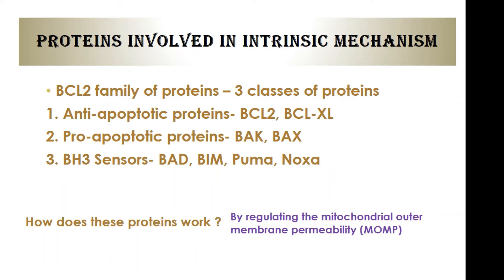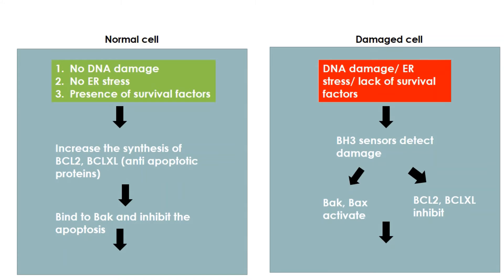In a normal cell there is no DNA damage, no ER stress, and there is presence of survival factors — so there is no death signal. In response, there is increased synthesis of anti-apoptotic proteins BCL2 and BCL-XL. These anti-apoptotic proteins bind to the pro-apoptotic proteins and inhibit the process of apoptosis.